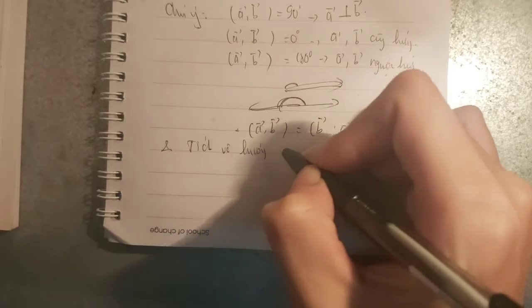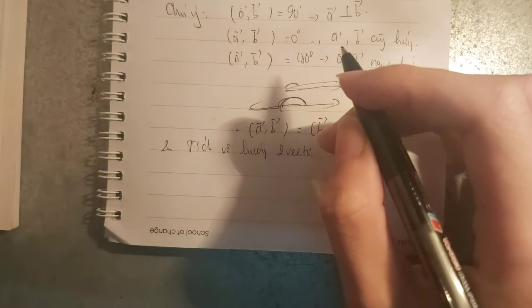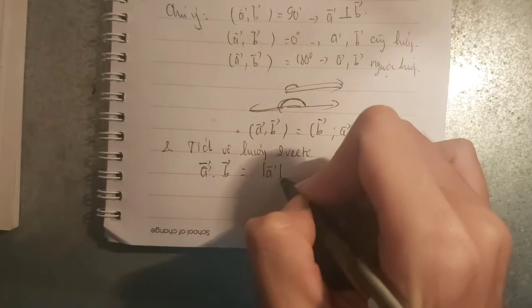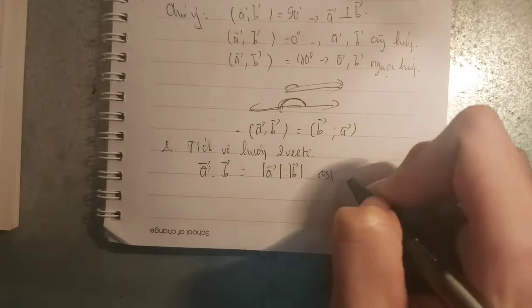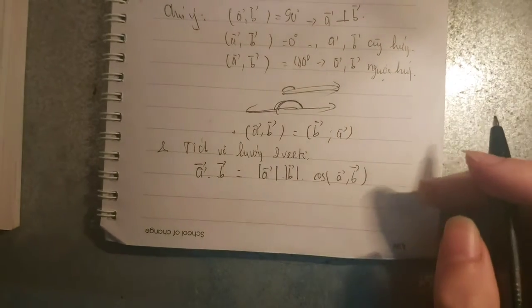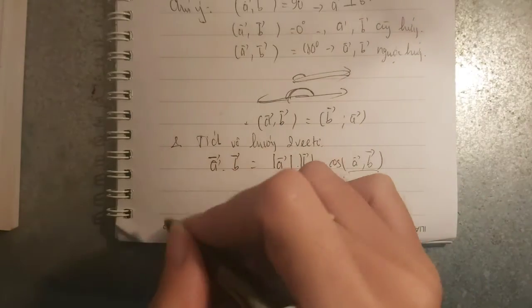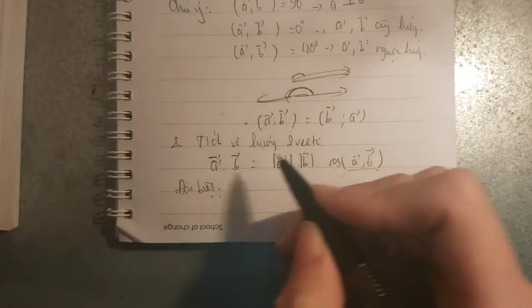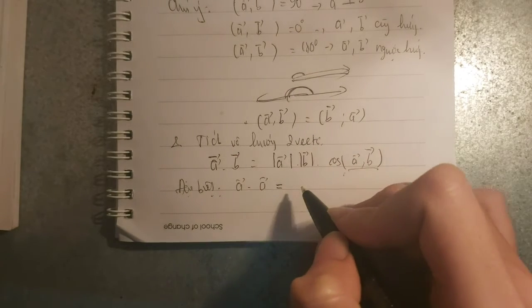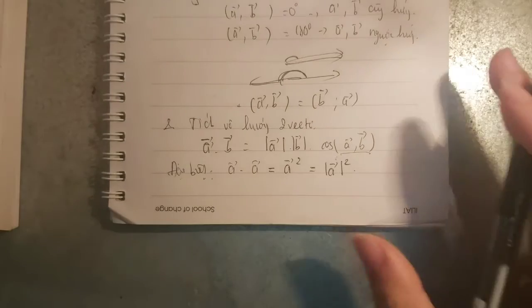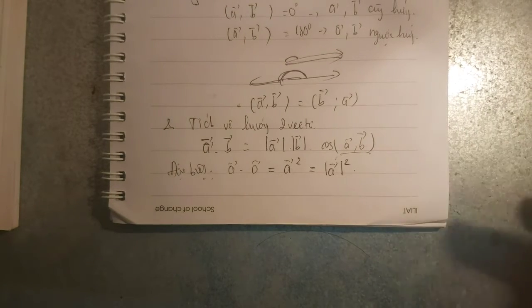Chúng ta sang phần 2, đó là phần tích vô hướng 2 vector. Đầu tiên, chúng ta có công thức: vector A x vector B sẽ bằng độ dài vector A x độ dài vector B x cos góc giữa A và B. Độ dài chúng ta đã học rồi, còn cái góc này thì chúng ta dựa bên trên. Và có một điều đặc biệt: vector A x vector A sẽ bằng vector A bình, và độ dài sẽ là bình độ dài vector A. Đây là phần hình thuyết.